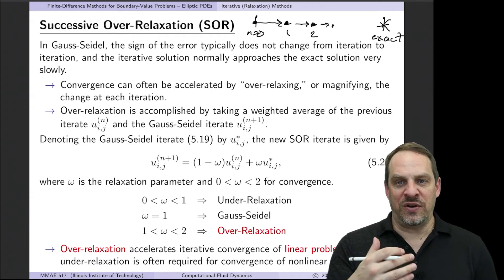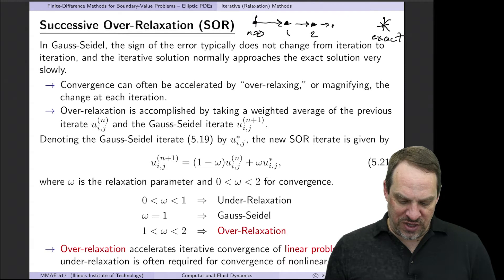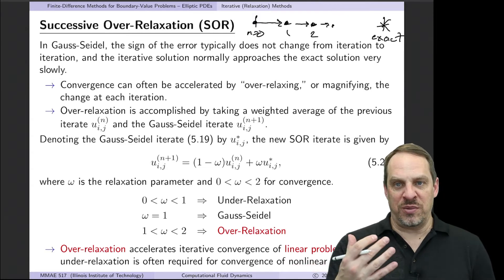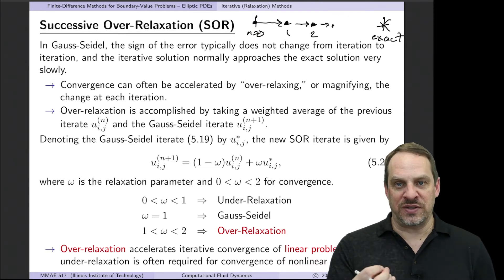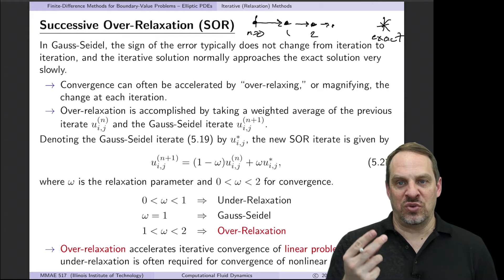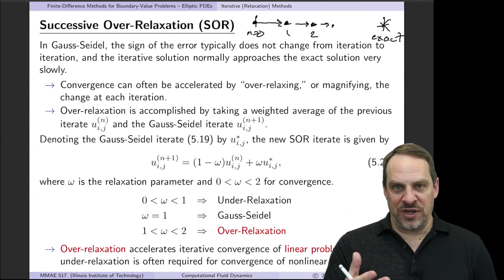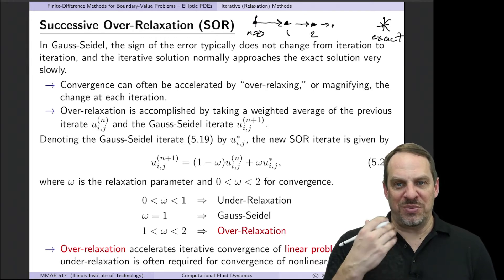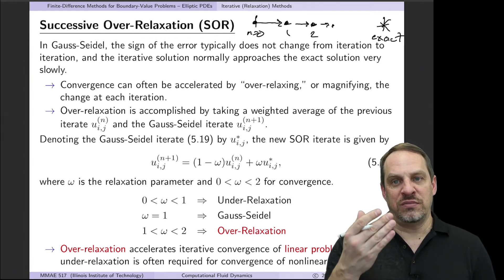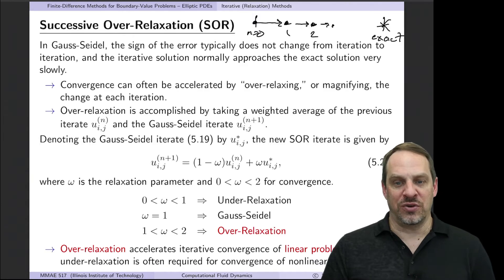Again, under-relaxation is often necessary for non-linear problems. Non-linear problems, we have to be very careful about the size of the step, so we often have to take shorter steps in order to keep it on track to converge. But for linear cases, we can often take bigger steps and dramatically increase the convergence rate in the form of many fewer iterations.